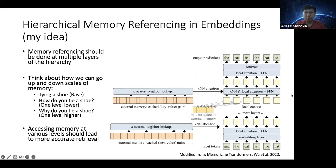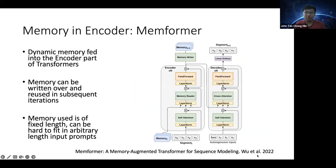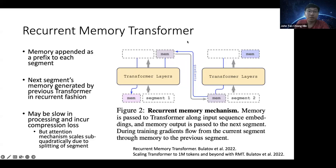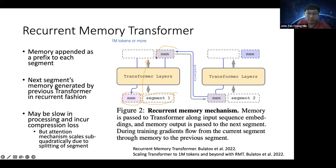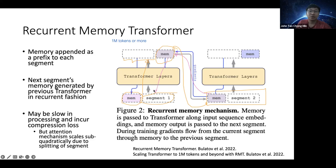A very similar idea is the Recurrent Memory Transformer by Bulatov et al. — there's been some hype about this paper claiming a transformer that scales up to 1 million tokens or more. You have a memory and a segment; you go through the transformer layer, and then you output both the result and a new memory for the next time step. This memory is transferred over to the next segment. You can backpropagate gradients all the way back through this memory — it's a backpropagatable memory. The memory helps apply information from earlier segments to later sections.